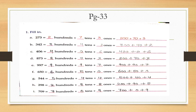In 273, two is at hundreds place, seven is at tens place, and three is at ones place. So you will write: 2 hundreds + 7 tens + 3 ones. In expanded form: 200 + 70 + 3. This is the expanded form of 273.